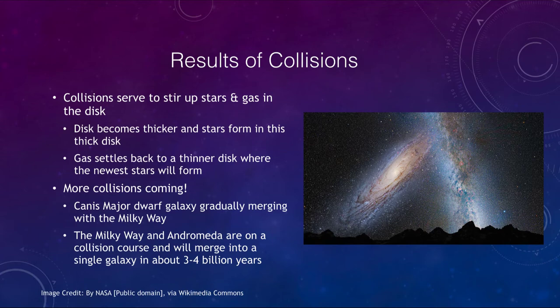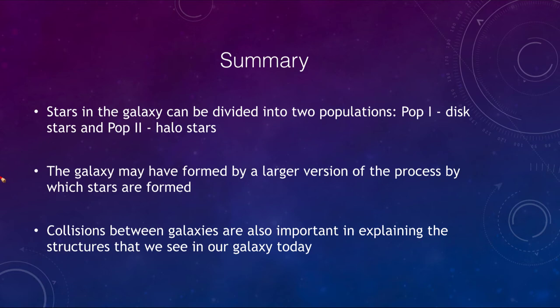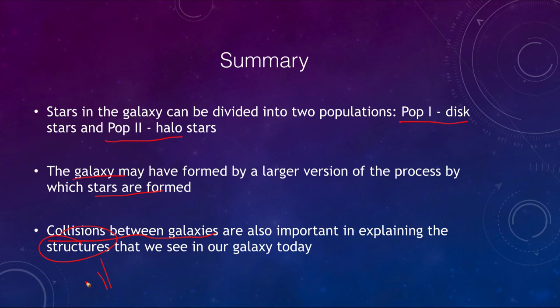To finish up with our summary: we talked about two different types of stars — population one stars in the disk and population two stars in the halo. We think galaxies could have formed by a larger version of the process by which stars form, but also that collisions between galaxies are very important for explaining the structures we see in our galaxy today. That concludes this lecture on stellar populations and formation of the galaxy — we'll be back again next time for another topic in astronomy, so until then have a great day everyone.